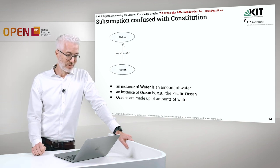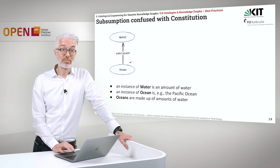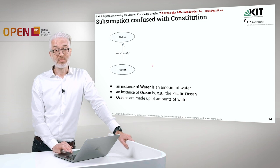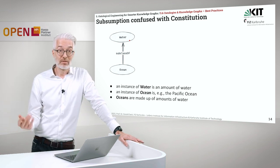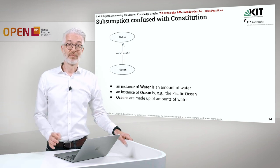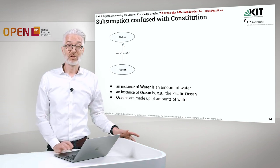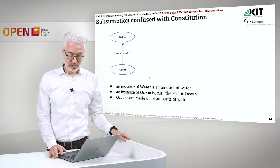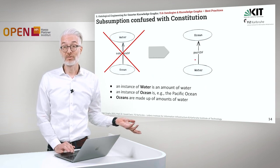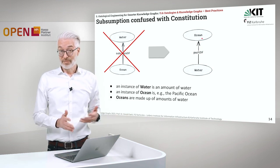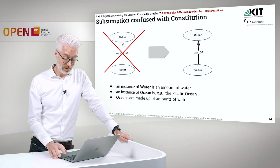Subsumption confused with constitution. We have: ocean is a subclass of water — that sounds strange. An instance of water would be a handful of water, a glass of water. An instance of ocean would be one of the oceans of the Earth — the Atlantic Ocean or the Pacific Ocean. However, oceans are made up of amounts of water. So the correct way to model that would again be a partonomy — but the other way around — that water is part of an ocean. So you see, it's sometimes not so easy to deal with the simplest of all relations, which is the subsumption relation.